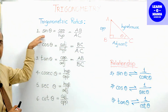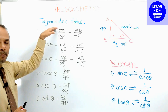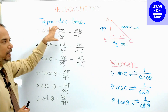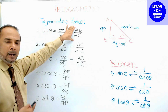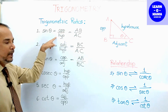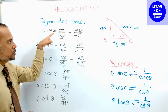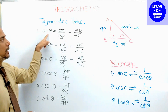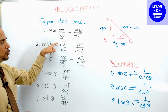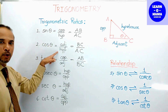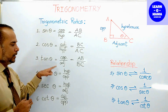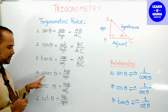So again: sin theta is always opposite upon hypotenuse — this relation is important. The names change with different triangles but the relation stays the same. Sin theta: opposite upon hypotenuse. Cos theta: adjacent upon hypotenuse. Tan theta: opposite upon adjacent.